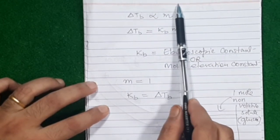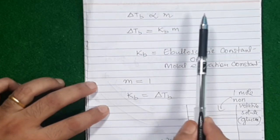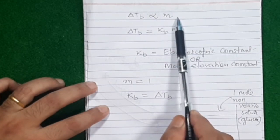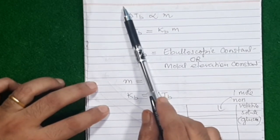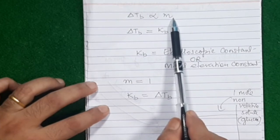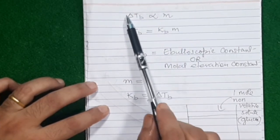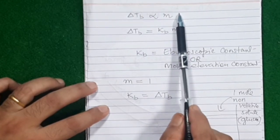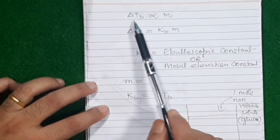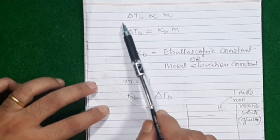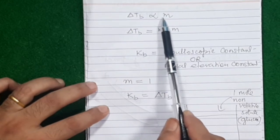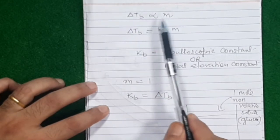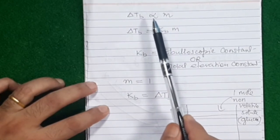If you add a little bit of impurity, molality will be low and the rise in boiling point will also be less. So they are directly proportional: more molality means more rise in boiling point. Elevation of boiling point of any liquid in a solution is directly proportional to its molality, provided the solution contains a non-volatile, non-electrolyte solute.